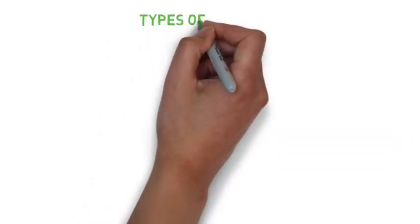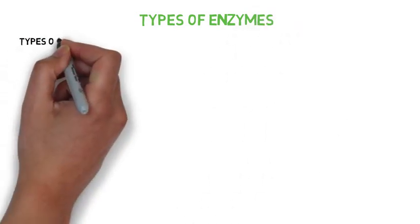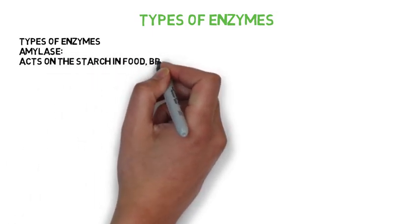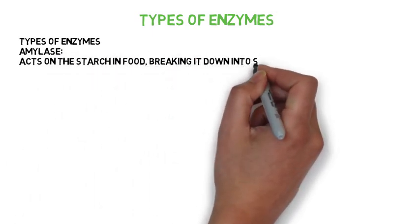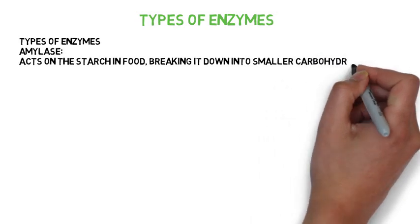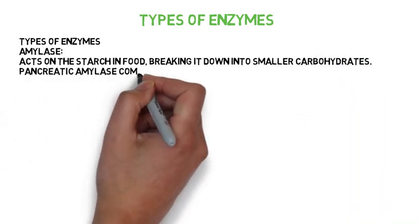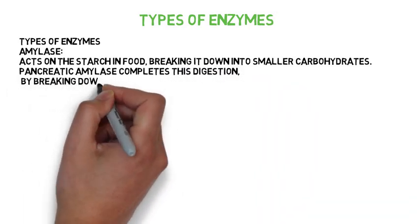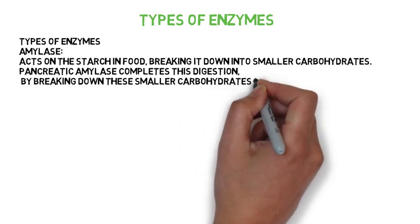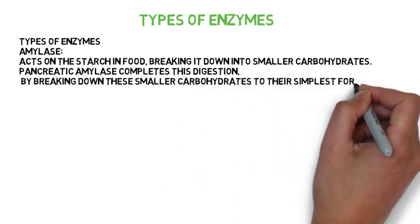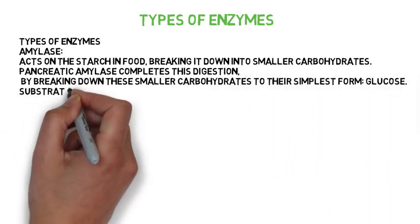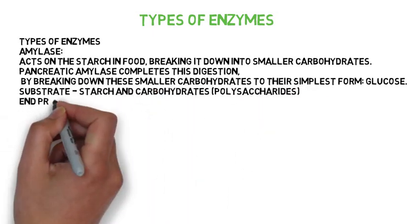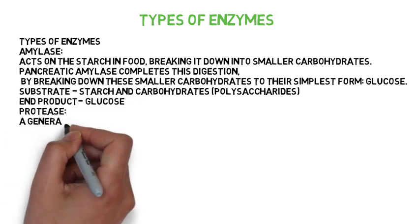Types of enzymes. Amylase acts on the starch in food, breaking it down into smaller carbohydrates. Pancreatic amylase completes this digestion by breaking down these smaller carbohydrates to their simplest form — glucose. Substrate: starch and carbohydrates (polysaccharides). End product: glucose.